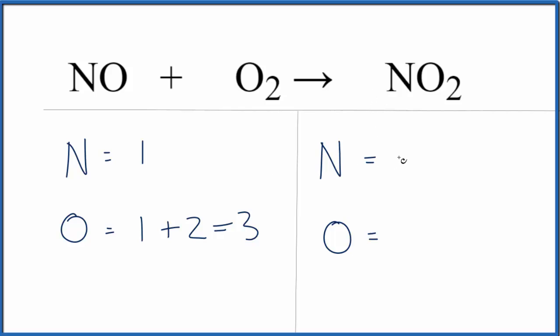Over on the products we have one nitrogen and two oxygens. Whenever I have an odd number I like to make that even so that'll make the balancing a lot easier for us.